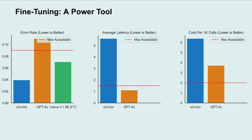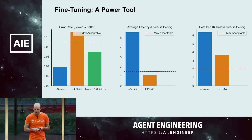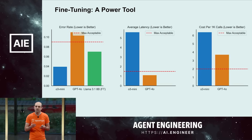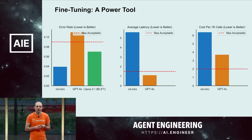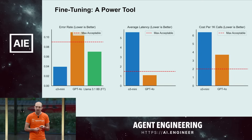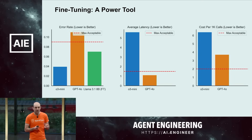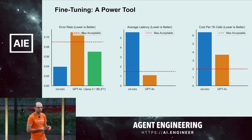We fine-tuned a model and found it can really bend that price-performance curve a lot. On the error rate — basically the inverse of accuracy — we were able to get to a place doing significantly better than GPT-4o, and importantly better than that nine percent threshold they needed. This used to be much harder to achieve, requiring a lot of manual labeling. It's become much easier because of models like O3-mini.